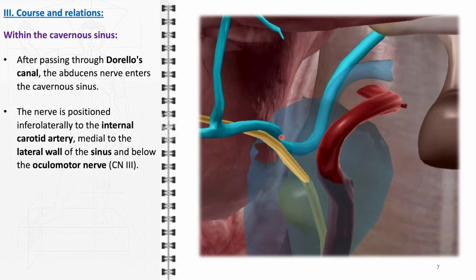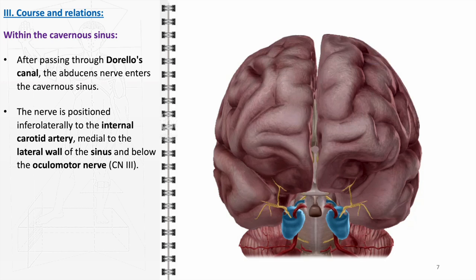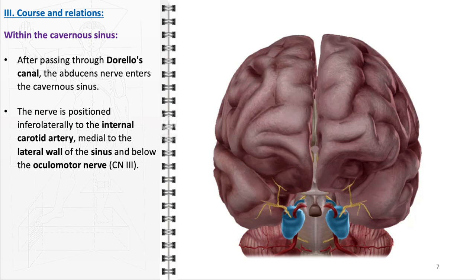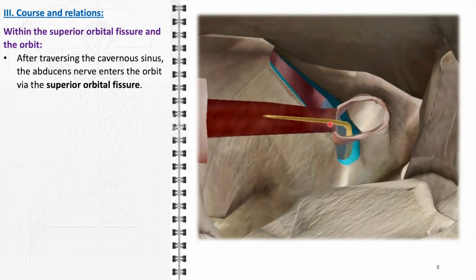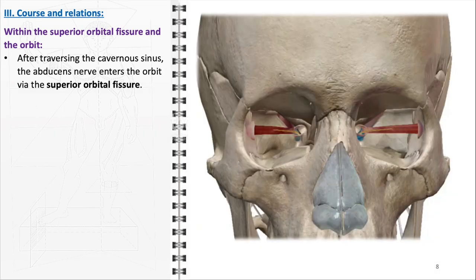Moreover, the abducens nerve is positioned below the oculomotor nerve within the cavernous sinus. This stratification is relevant in the context of orbital apex syndromes or cavernous sinus pathologies, where the clinical presentation can help differentiate which nerves are affected based on their anatomical locations. After its journey through the cavernous sinus, the nerve proceeds to enter the orbit via the superior orbital fissure, situated between the greater and lesser wings of the sphenoid bone, allowing the passage of not only the abducens nerve but also other crucial structures such as the oculomotor and trochlear nerves, the ophthalmic branch of the trigeminal nerve, and the ophthalmic vein.